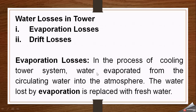In evaporation losses, water evaporates from the circulating water into the atmosphere. The water which comes from the system and needs to be cooled passes through the tower and evaporates from the circulating water into the atmosphere.